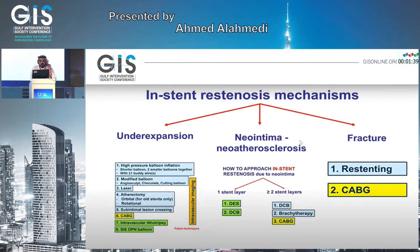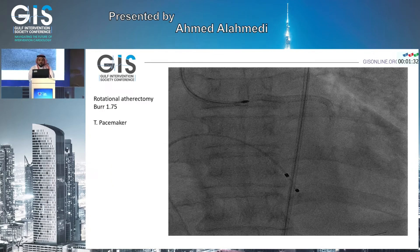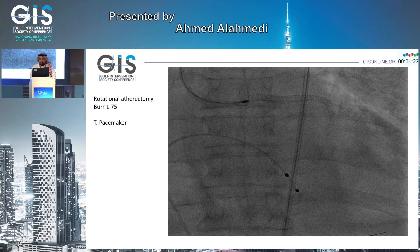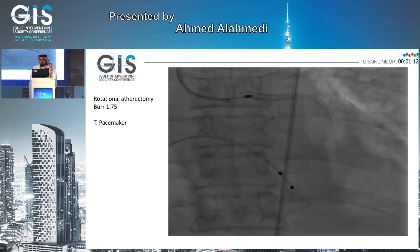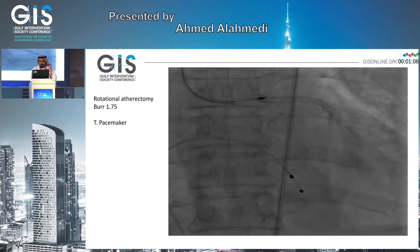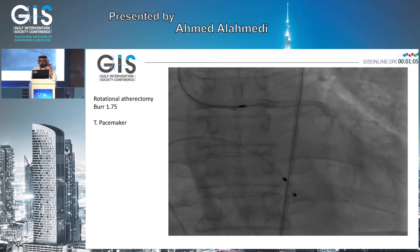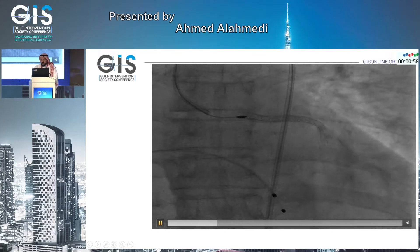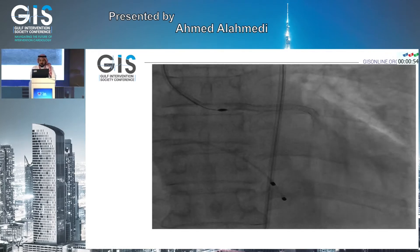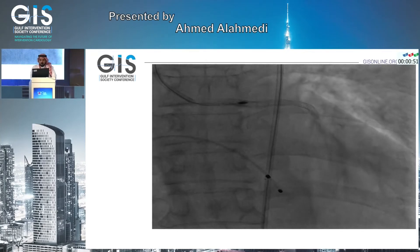I feel that in a lesion in the left main, you cannot stay a long time. So we used a rotational atherectomy burr of 1.75 — we have a 7 French guide. We placed a temporary pacemaker, as this patient has a dominant left system. We applied the ablation to the neointima, and to be sure we also applied it at the ostium of the left main — gently and slowly, up to the guide.